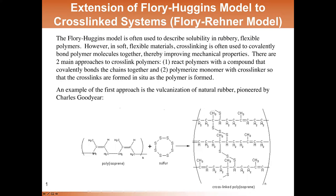Polyisoprene can be a soft, gooey plastic that certainly could not be used for applications like car tires. However, if you mix polyisoprene with sulfur and heat it up, the sulfur undergoes chemical reactions with some of the bonds on neighboring polymer chains and actually stitches those polymer chains together into a giant cross-linked mass. In doing so, it introduces covalent linkages between neighboring polymer chains and essentially binds them together.